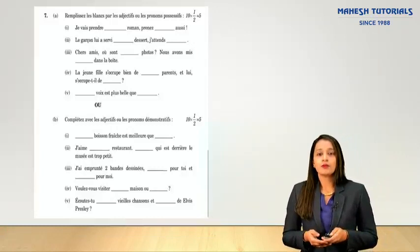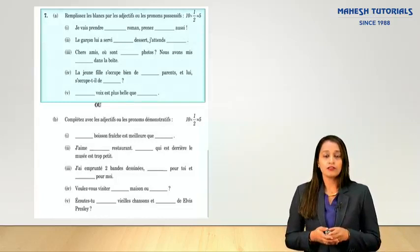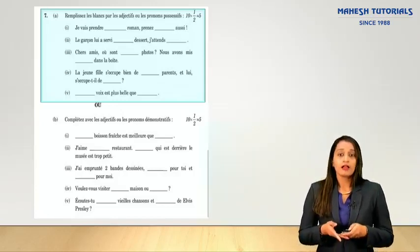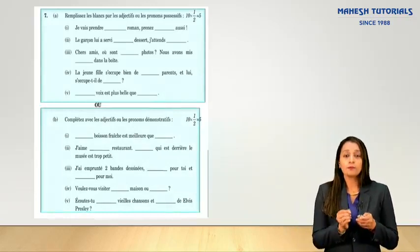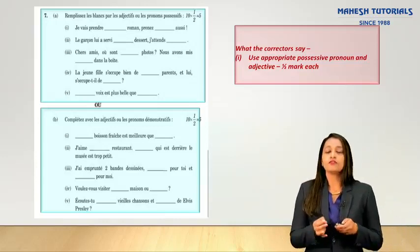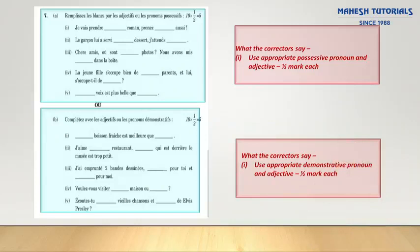The next part involves completing blanks with possessive adjectives or possessive pronouns. Two blanks are given per sentence and you decide where to use each. Each sentence carries one mark — half a mark per blank. Similarly for demonstrative pronouns and adjectives: two blanks per sentence, half a mark each, and even a small mistake can cost that half mark. Identify the number and gender of the noun and use the correct possessive or demonstrative adjective and pronoun accordingly.